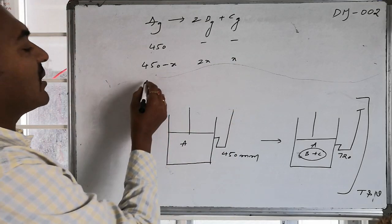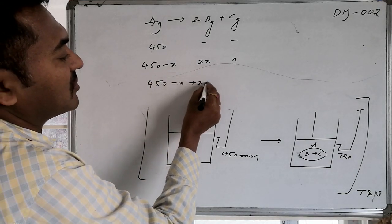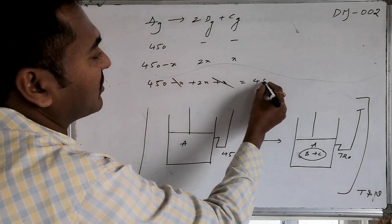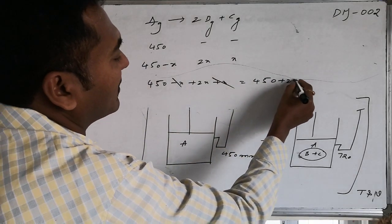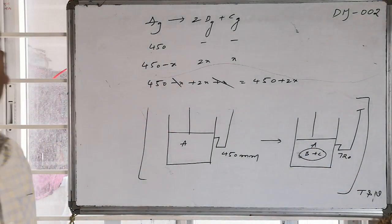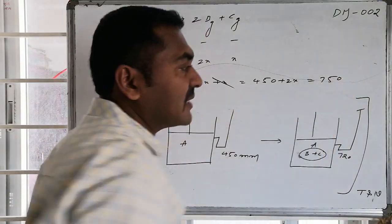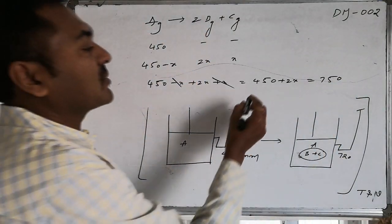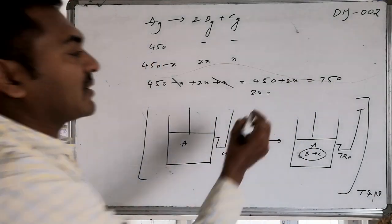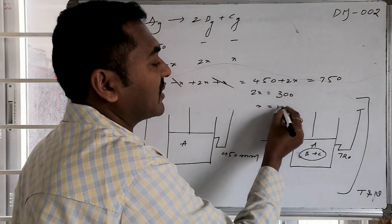At equilibrium, the total number of molecules will become equal to 2x plus x plus x minus x gets cancelled, this will become equal to 450 plus 2x. This 450 plus 2x value is found to be equal to 720. So therefore 2x will become equal to 750 minus 450 is equal to 300. x is equal to 150.